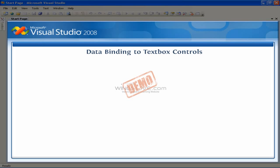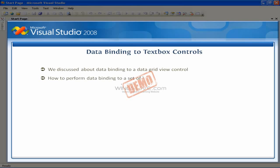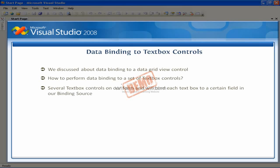In this lesson we'll learn how to perform data binding to a set of textbox controls. We'll be using several textbox controls on our form, binding each textbox to a certain field in our binding source. We'll then use a binding navigator control to navigate through the records in our data set.